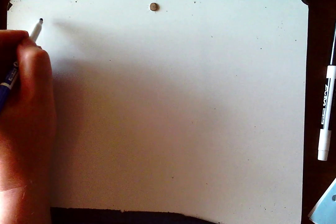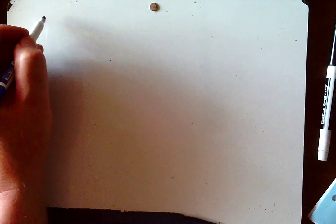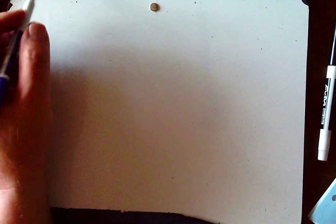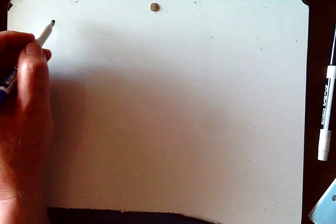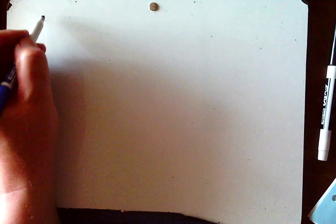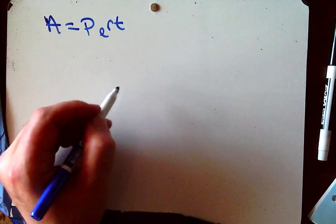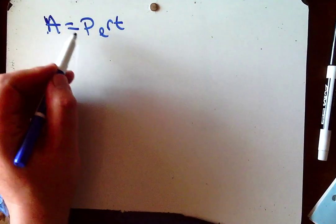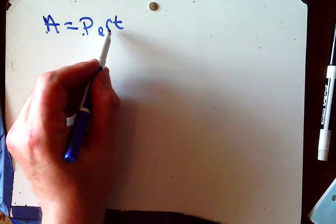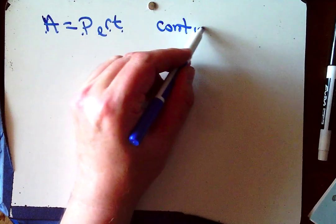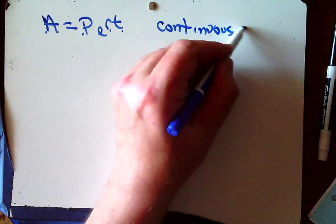Today we're starting our review of exponentials and logs, which will run for the next few videos. I thought we could start with writing down some basics that we know. We know A equals PE to the RT, where A is our ending amount, P is our starting amount, R is our rate, and T is time. We use this for continuous growth.